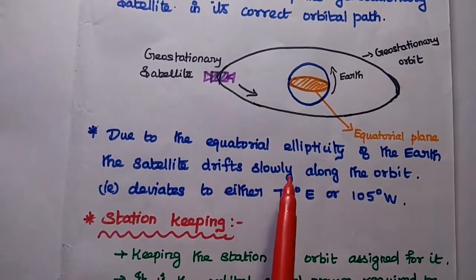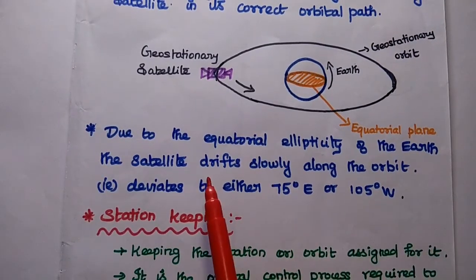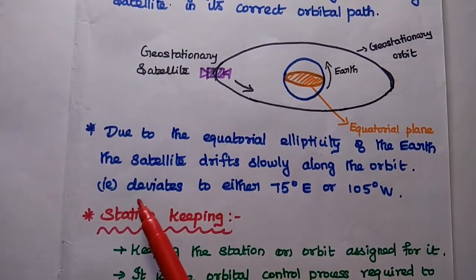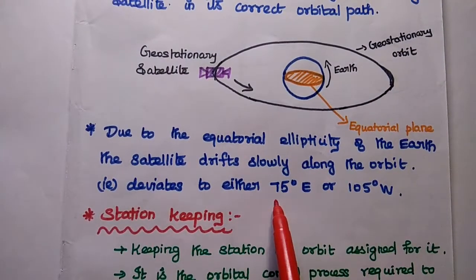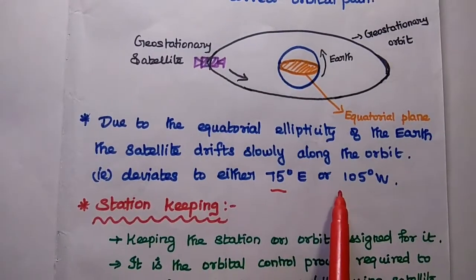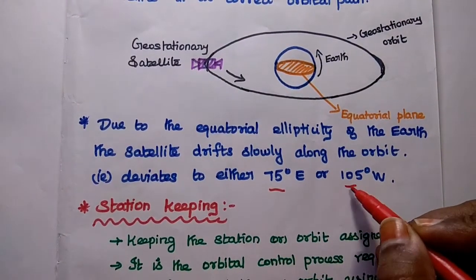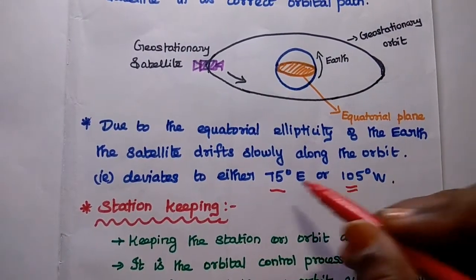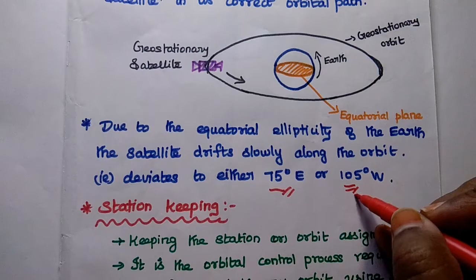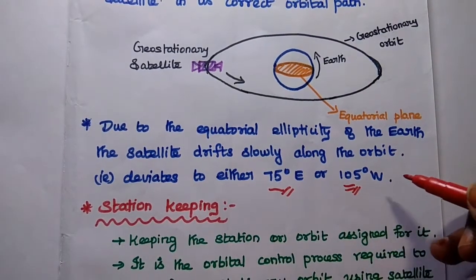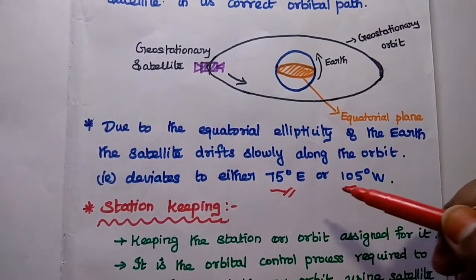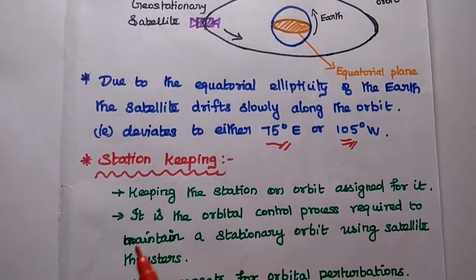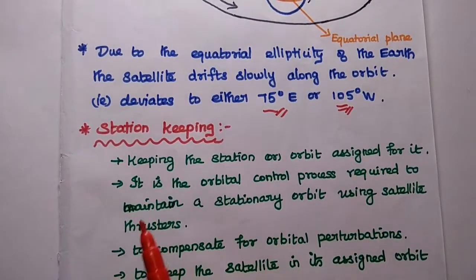Due to equatorial ellipticity of the Earth, the satellite drifts its position slowly along the orbit. It can deviate to either 75 degrees east or 105 degrees west. These two stable points are known as satellite graveyards. At these two points, the satellites are not working in a proper condition, so we need to avoid the satellite moving towards these two positions.